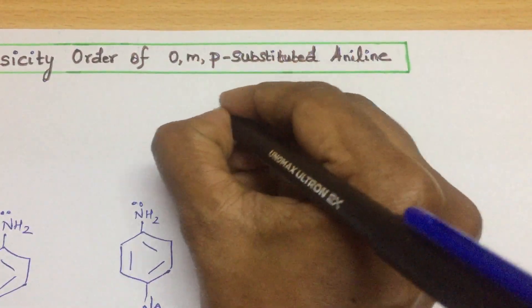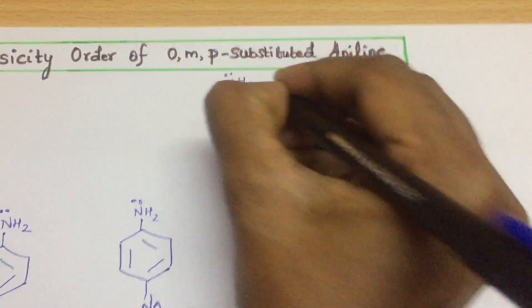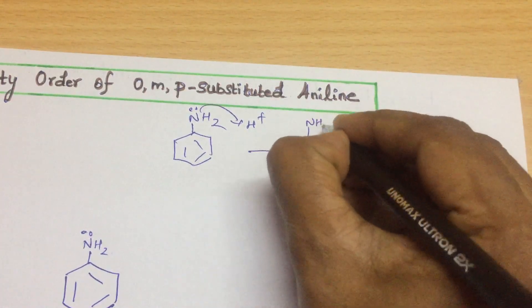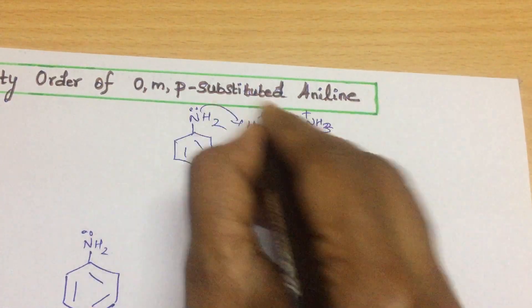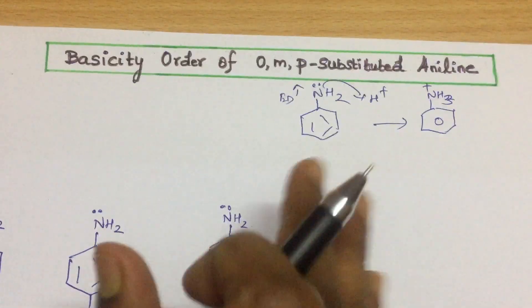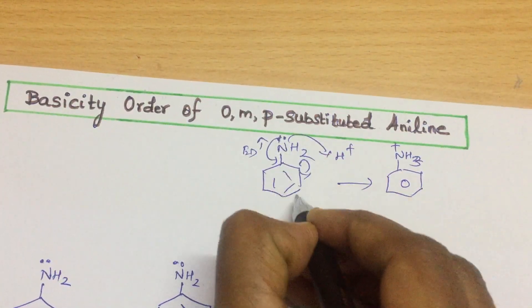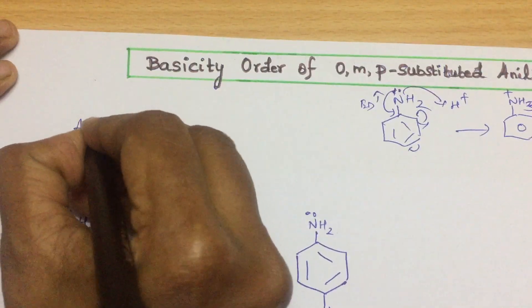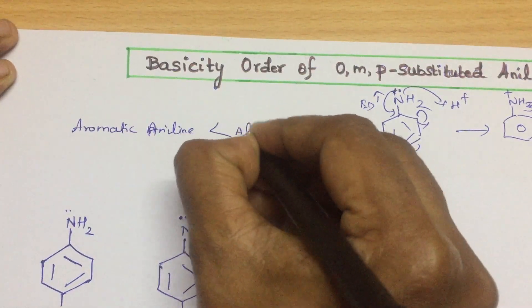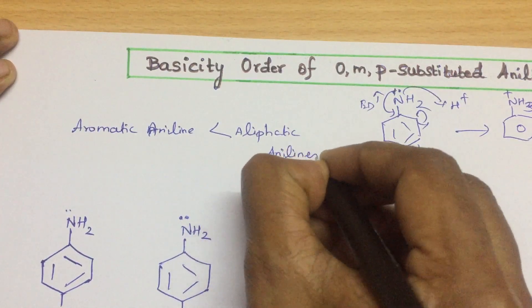For aniline, what is basicity? It is the capability to donate electrons to a proton — it has to donate electrons to abstract a proton. So if the electron density is more, the basicity will be more. We already saw in the previous video that since electrons in the aromatic system are involved in resonance, aromatic anilines are less basic than aliphatic anilines.